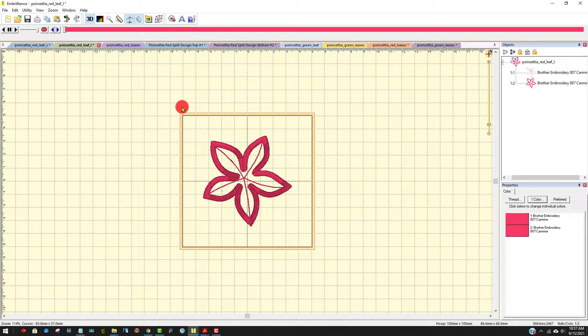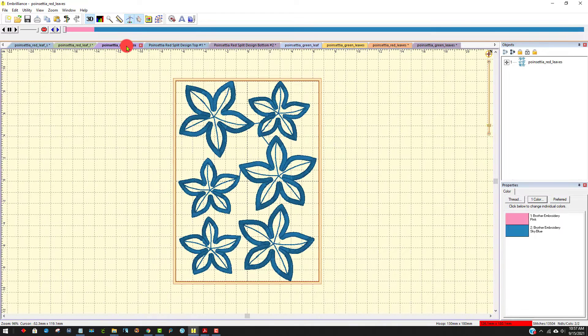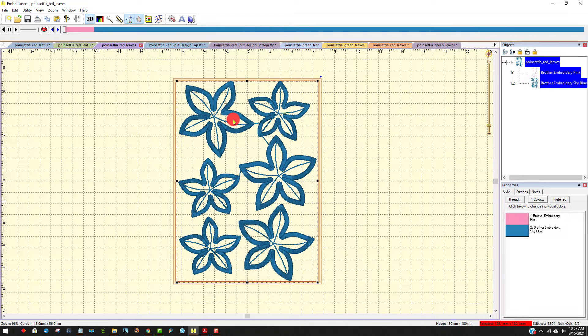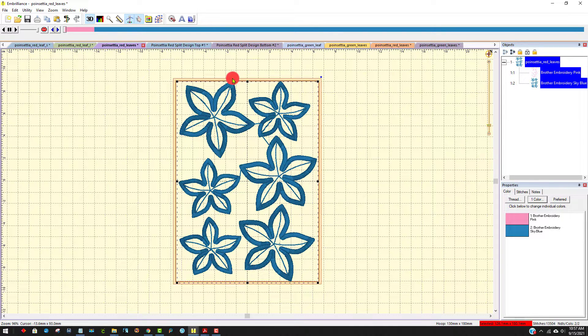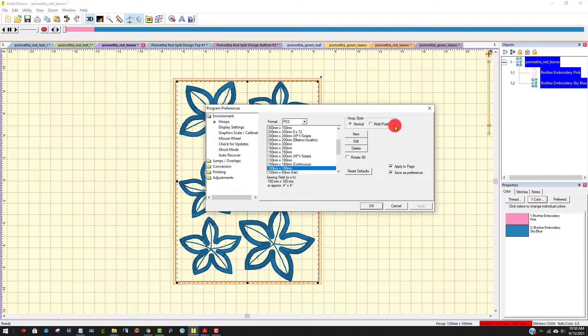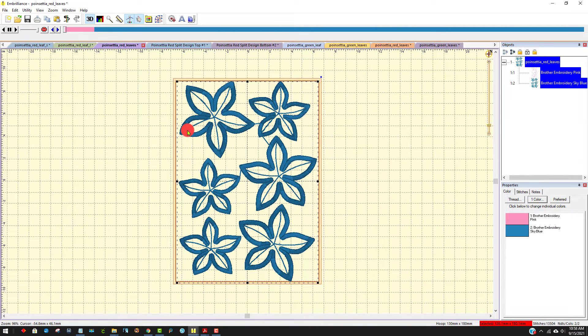So you can see that the poinsettia leaf small, the S stands for small, fits in a four by four hoop as does the large poinsettia leaf. And again, I would change this to one color. However, I have a five by seven hoop that goes with my PE 770 and PE 800. So I could actually have it like this where I can fit three large ones. I can put three of the large ones and three of the small ones in the five by seven hoop, which is really good, right? Because I need thirty five of each to make a thirty five light set.